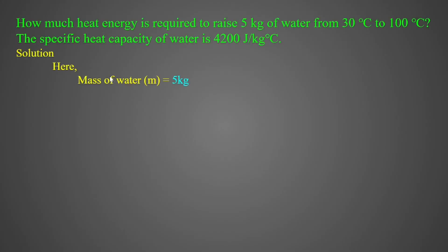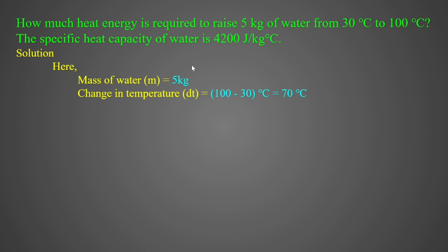Numerical: Q equals msdt. How much heat energy is required to raise 5 kg of water from 30 degrees Celsius to 100 degrees Celsius? The specific heat capacity of water is 4200 joules per kg per degree Celsius. Mass m equals 5 kg. Change in temperature dT equals T2 minus T1 equals 100 minus 30 equals 70 degrees Celsius.